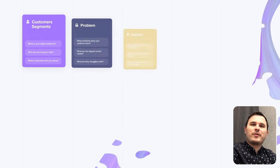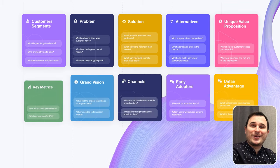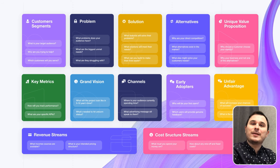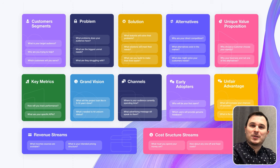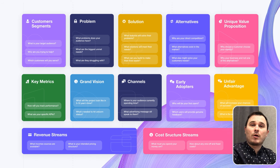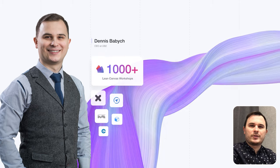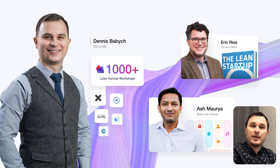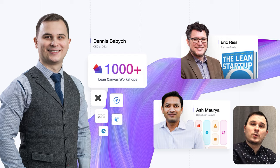Each and every business starts with the business plan, but you should use the MVP approach even in the business plan creation process. For this, the Lean Canvas Modified tool is the best tool. It's like a business plan on a napkin that will cover all hidden aspects that you need to focus on. This knowledge comes from three different sources: Lean Startup by Eric Ries, Ash Maurya and his basic Lean Canvas, and the experience of my 1000-plus Lean Canvas workshops with my clients.